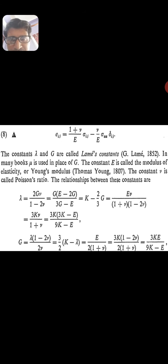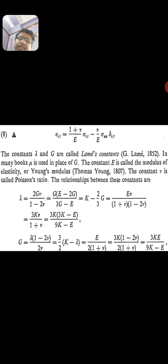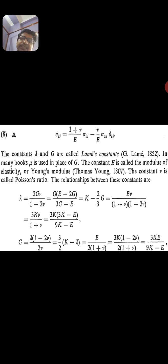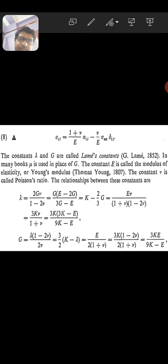A very important formula: ε_ij = (1+ν)/E · σ_ij − ν/E · σ_αα δ_ij. The constants λ (gamma) and G are called Lamé constants. In many books, μ is used in place of G. The constant E is the modulus of elasticity or Young's modulus, and ν is called Poisson's ratio.